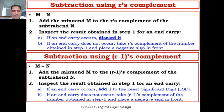In the second step, there is a little variation. We inspect the result of step 1 for an end carry. If there is an end carry, we add 1 to the least significant bit.